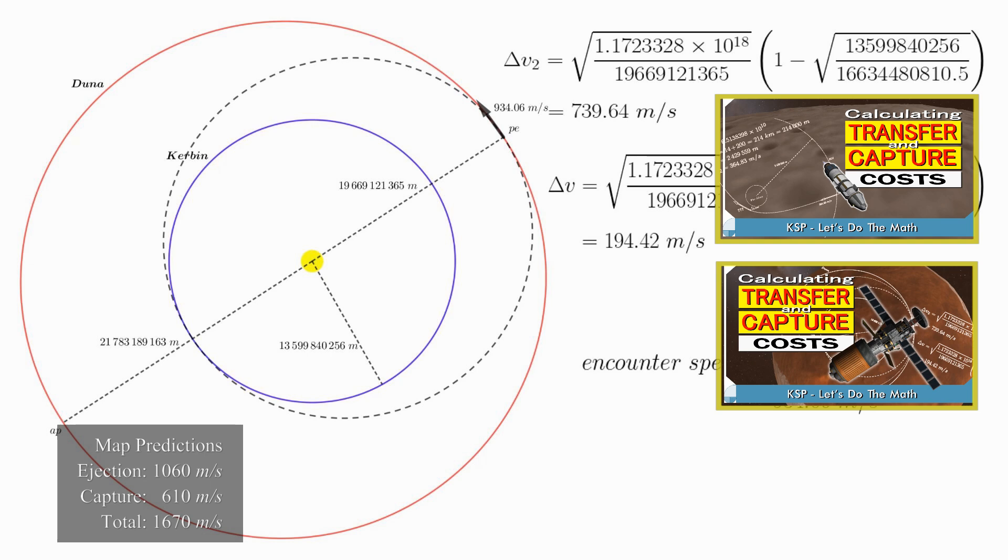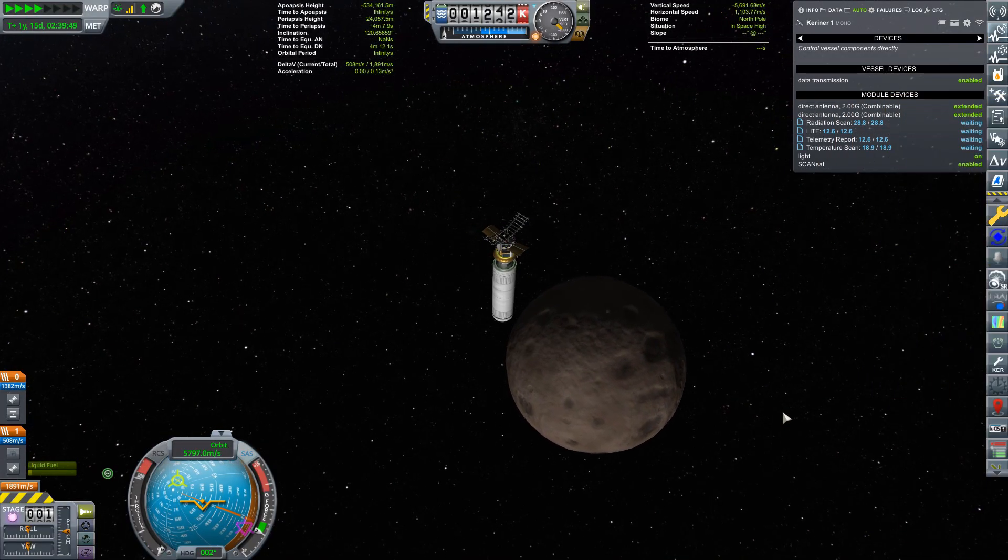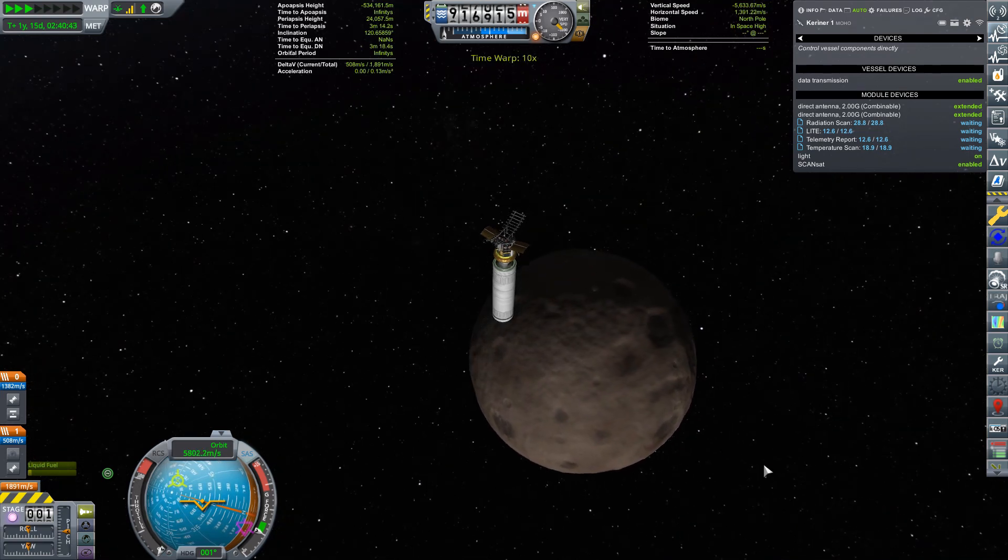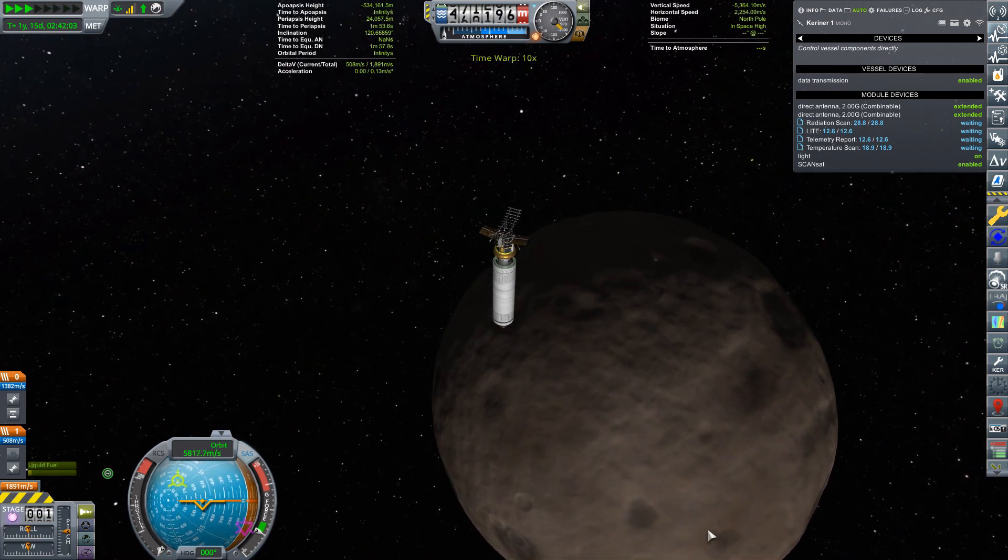Today, we are adding inclination changes into the mix by taking on the closest planet to the sun, Moho. It is certainly messier than the delta-V maps imply, but if you are ready, let's do the math.